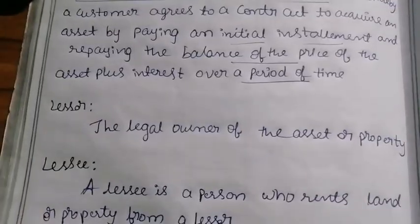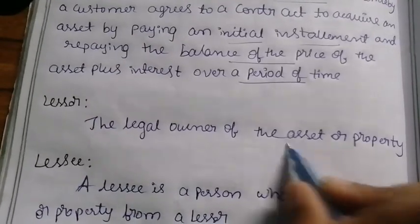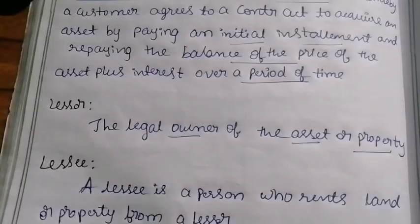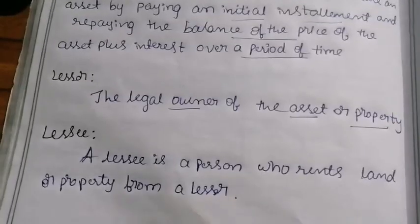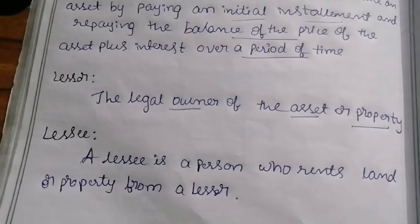Next, let us see the meaning of lessor. The lessor is the legal owner of the asset or property — the asset owner or property owner. For example, if I am the owner of an asset or property, I become the lessor. A lessee is a person who rents land or property from a lessor. If I give my land to someone, that person becomes the lessee.